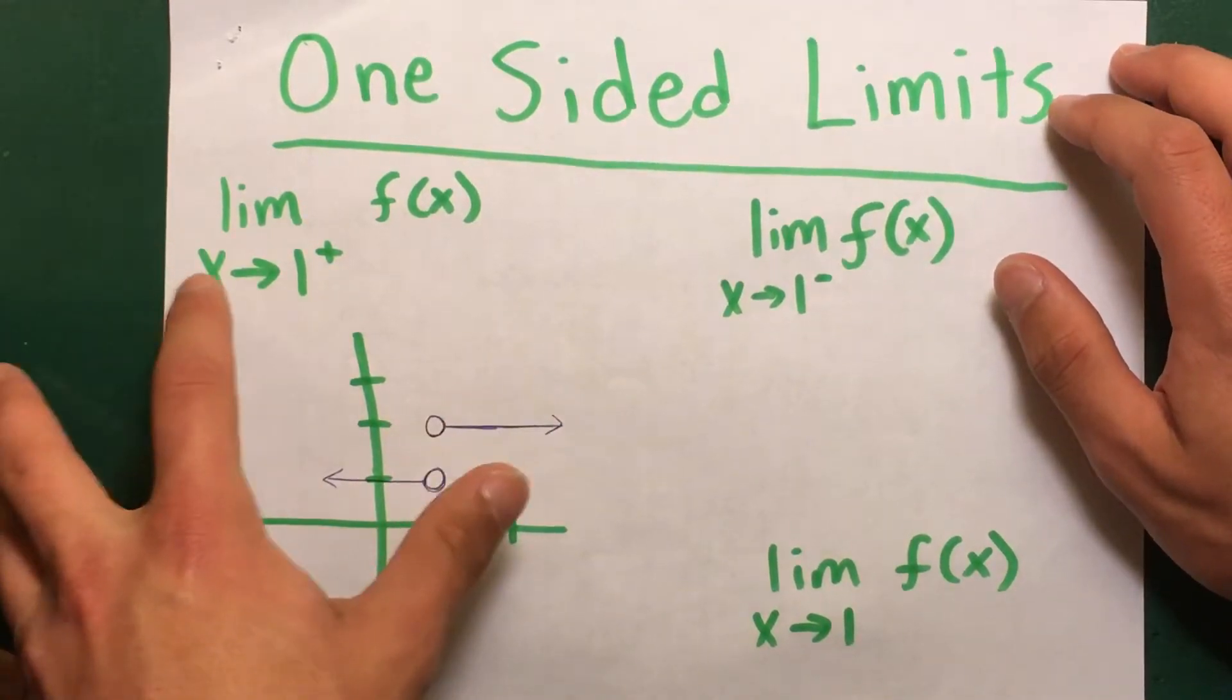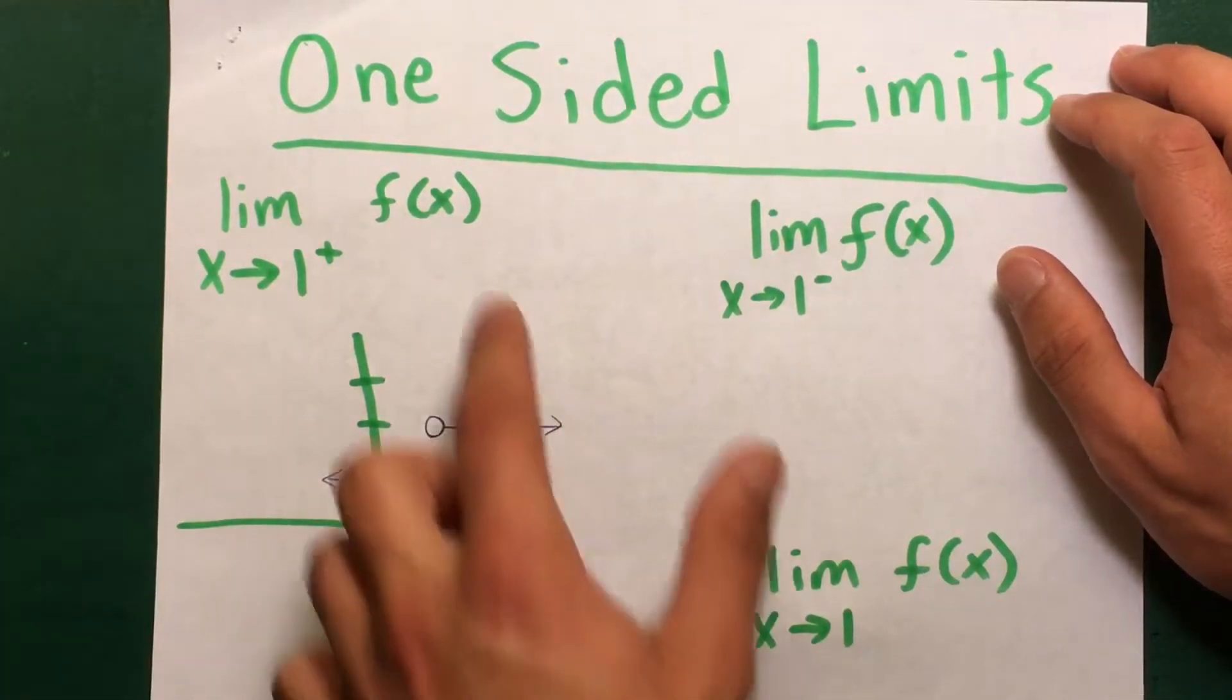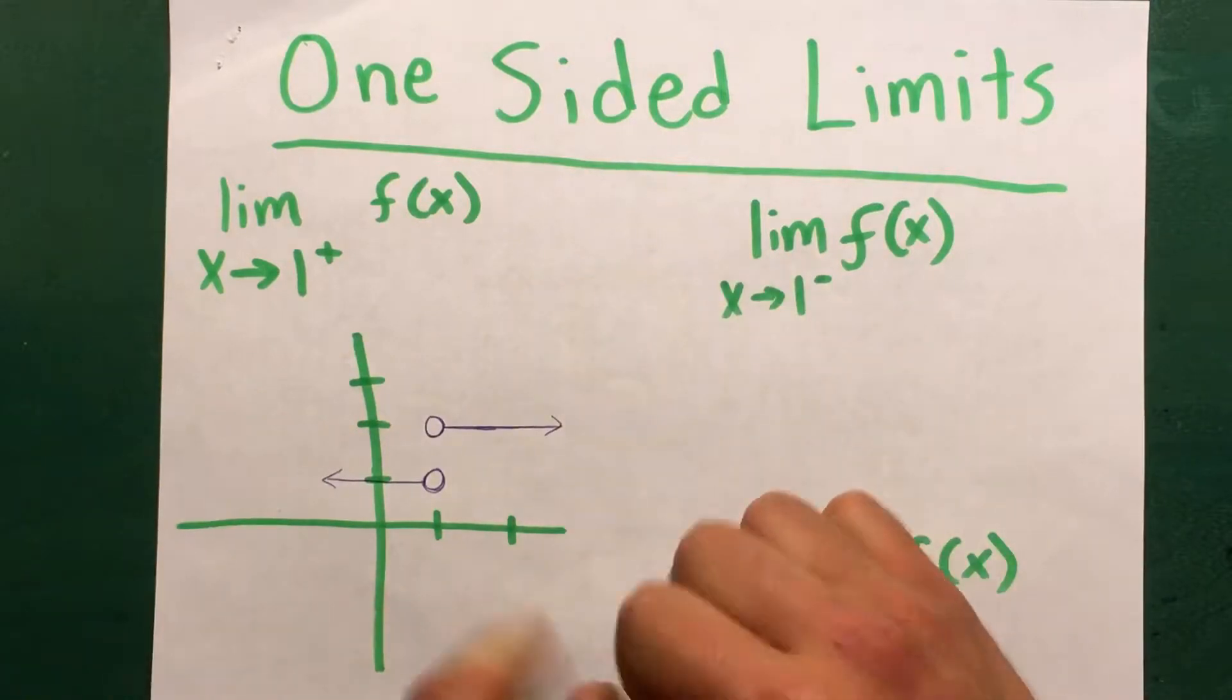So to begin with, we have the limit as x approaches 1 from the right of f. So right here we have our graph, the function.